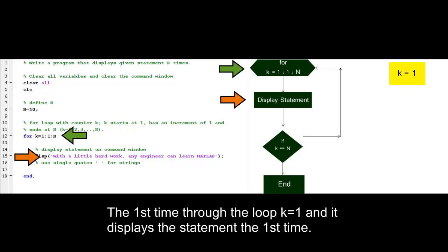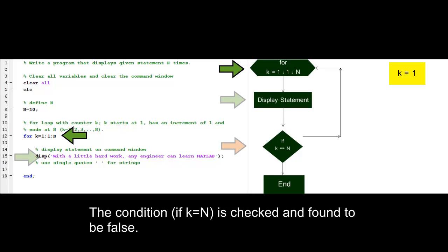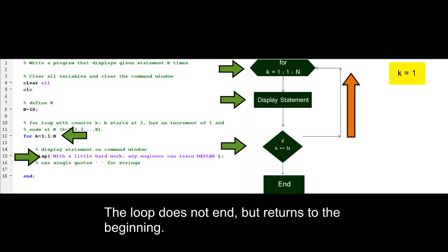The first time through the loop, k equals 1, and it displays a statement the first time. The condition if k equals n is checked and found to be false. The loop does not end, but returns to the beginning.